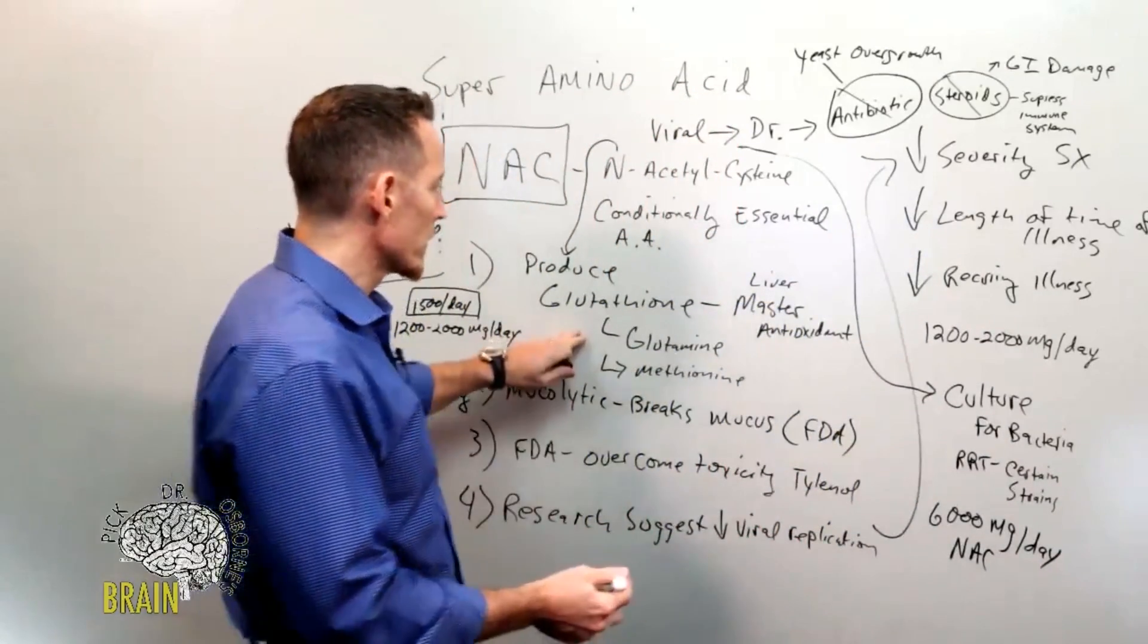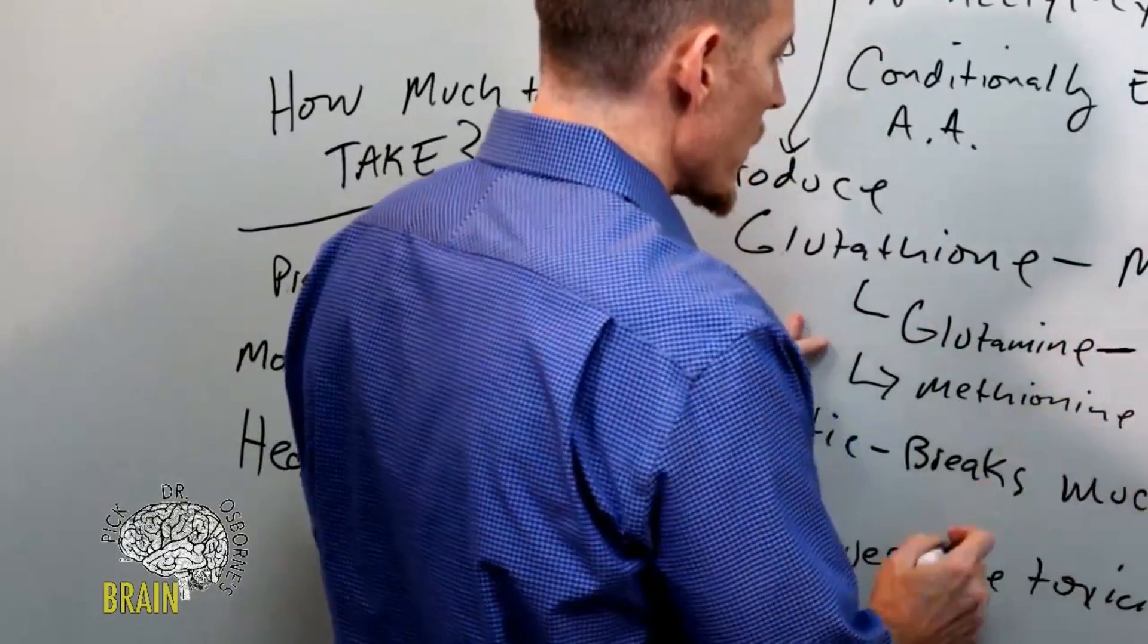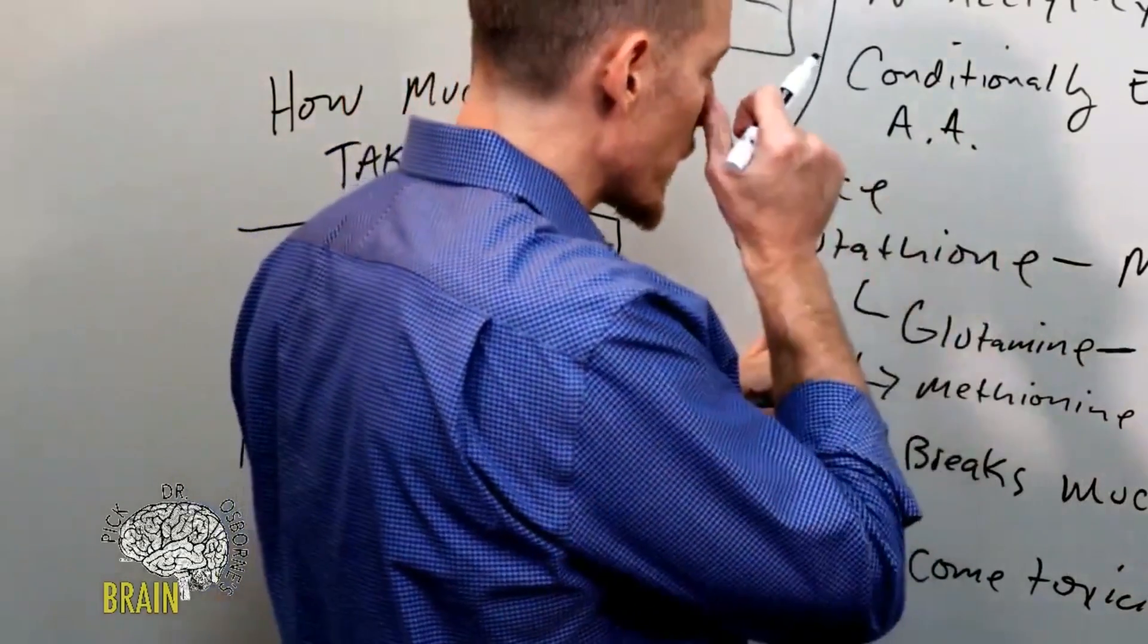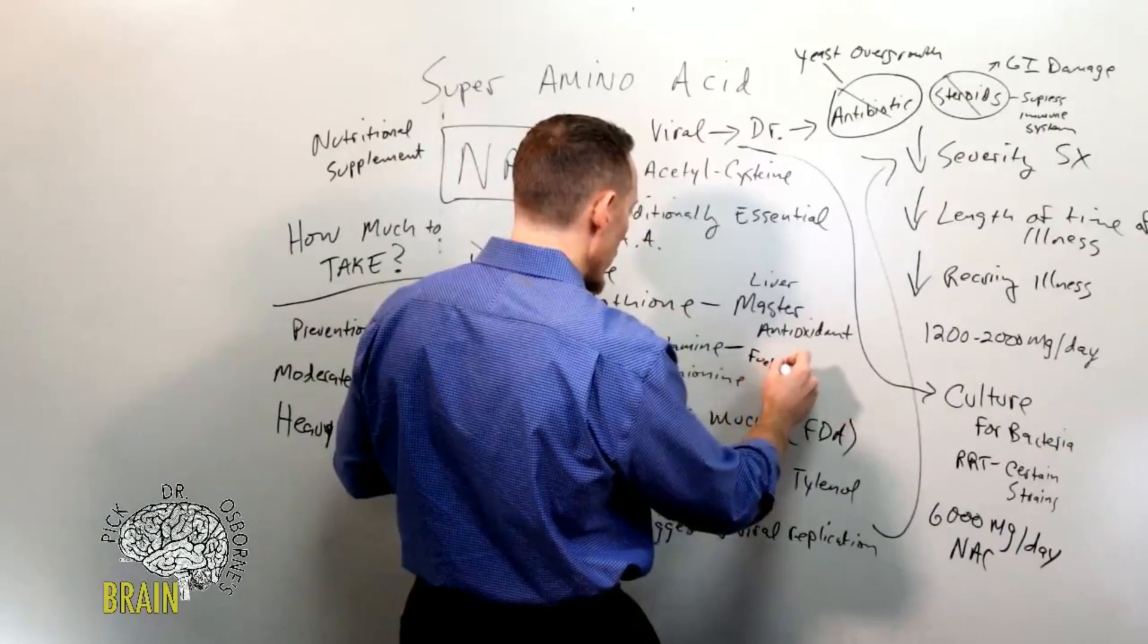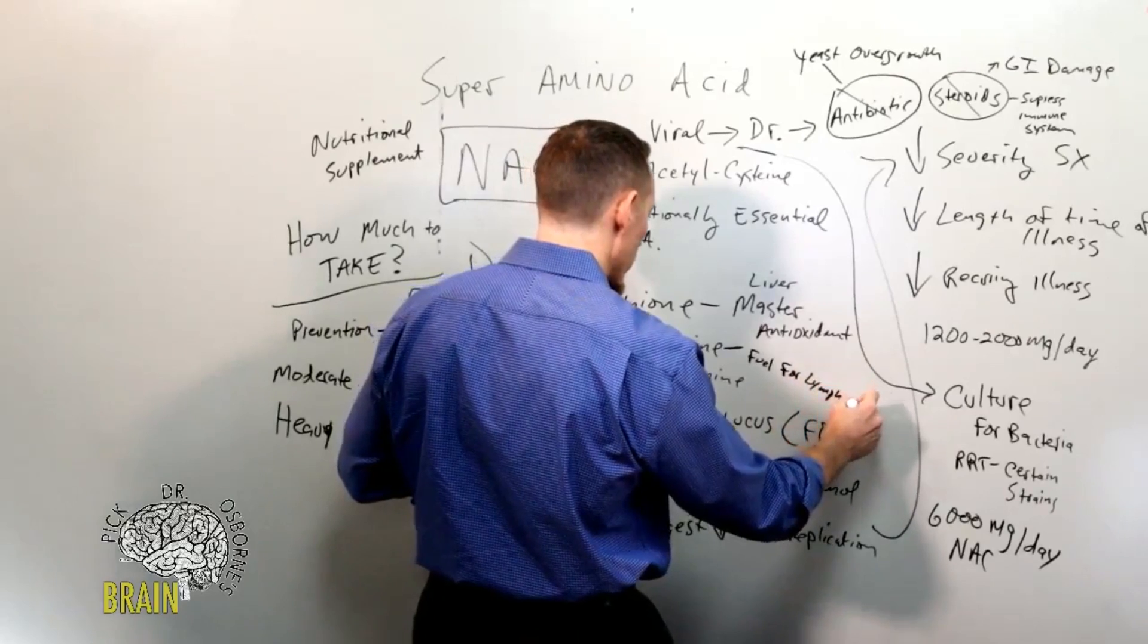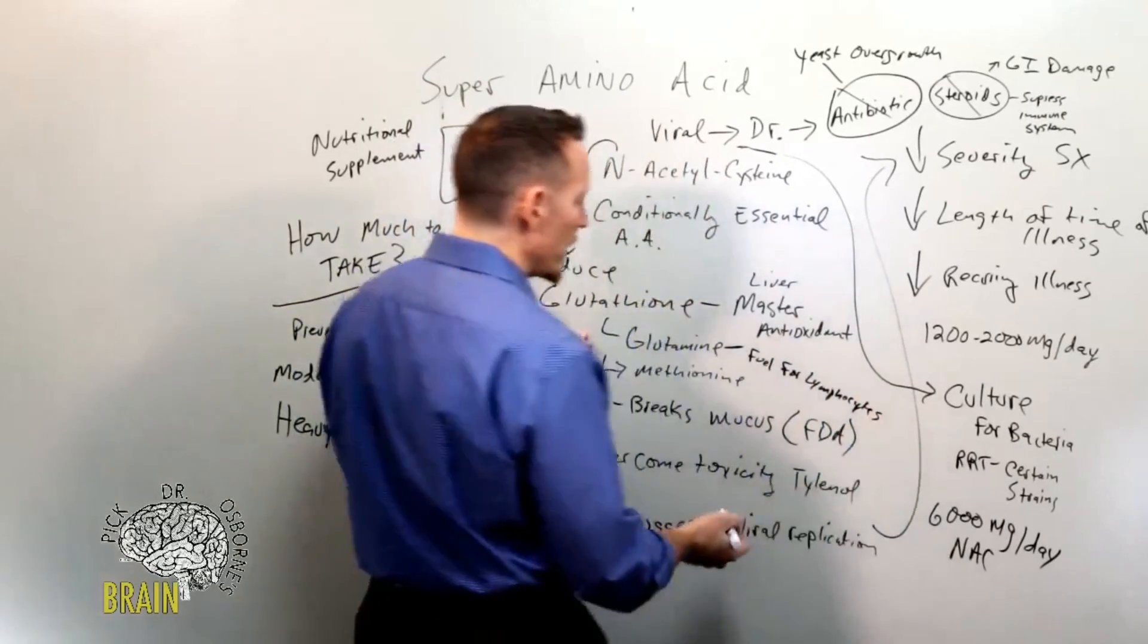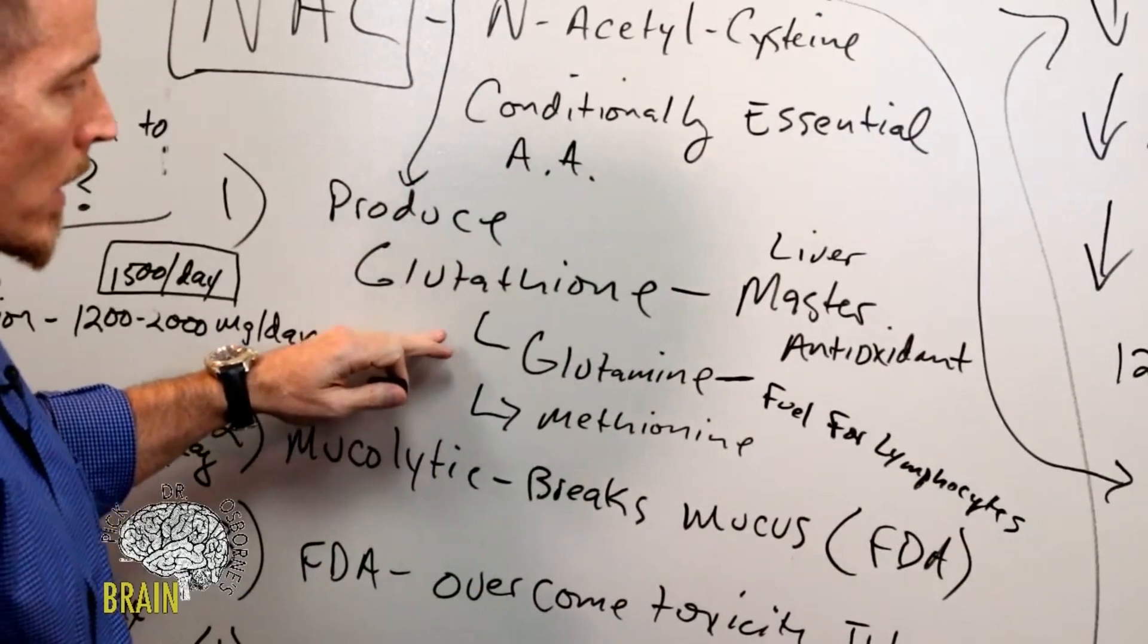I wanted to dive into L-glutamine because some of you have asked me about it. L-glutamine, as we mentioned earlier, is one of the three agents necessary to produce glutathione, which is what your liver uses to detoxify. But glutamine is also the fuel for your lymphocytes. A lymphocyte is a specialized type of white blood cell that helps you produce antibodies.